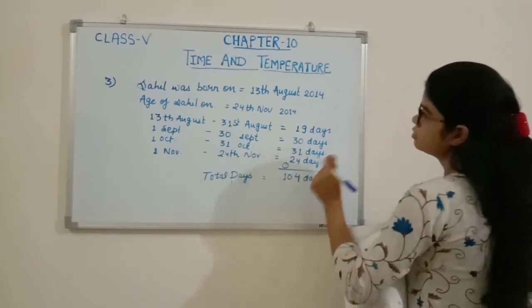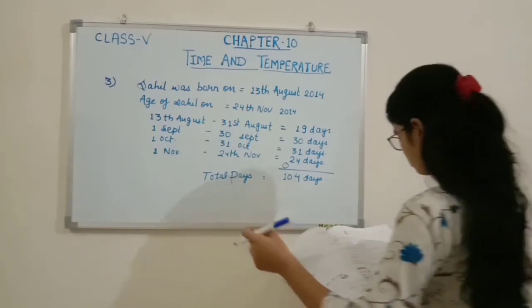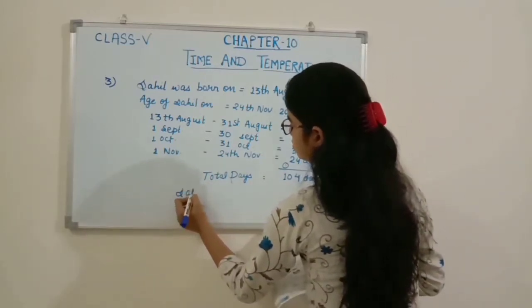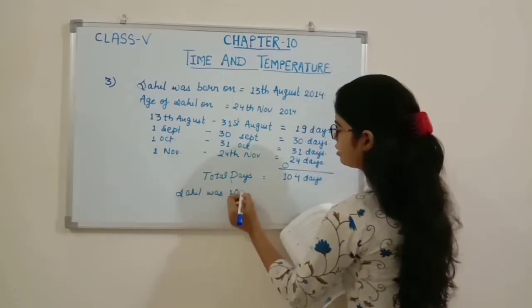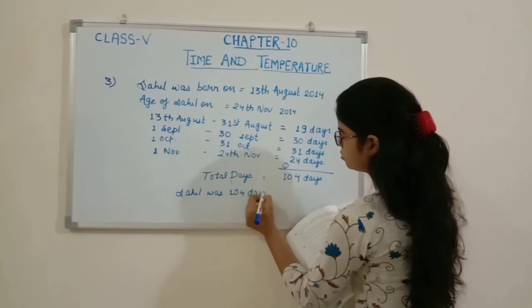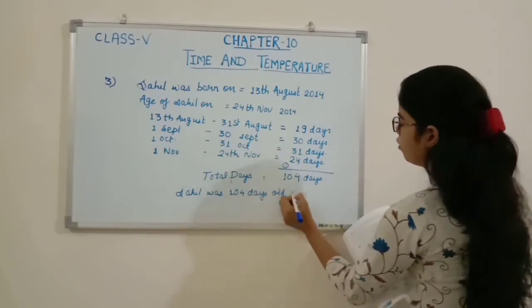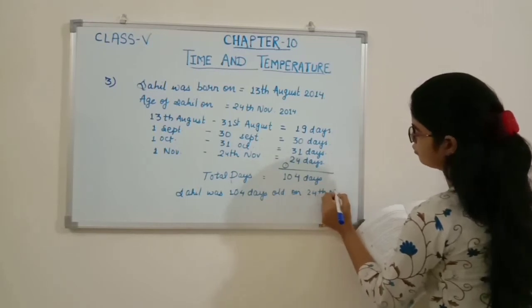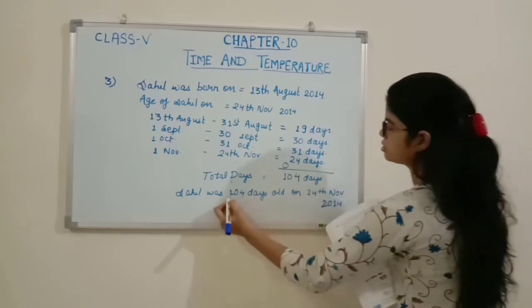So how old was Sahin? Sahin was 104 days old on 24th of November 2014. This is our answer.